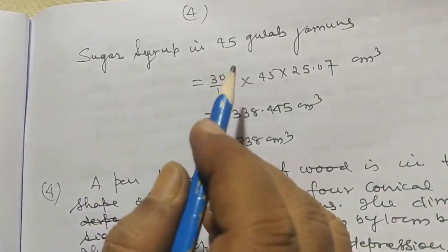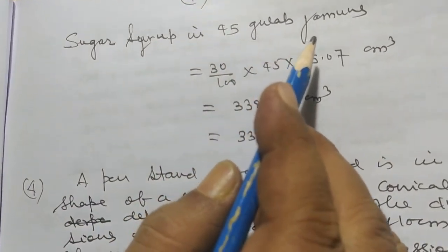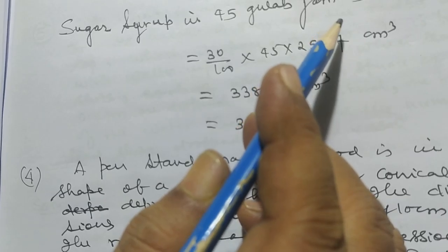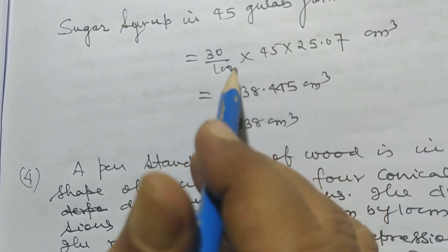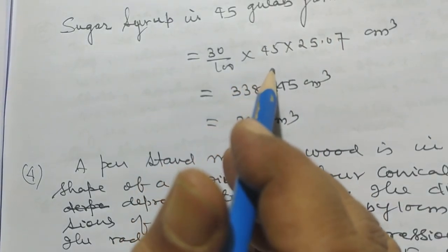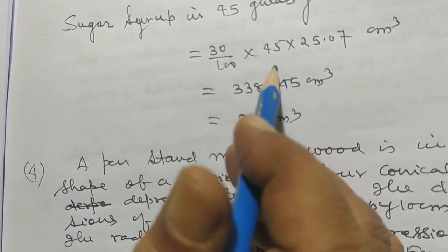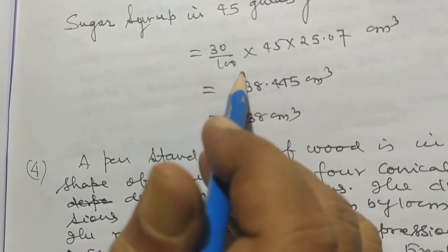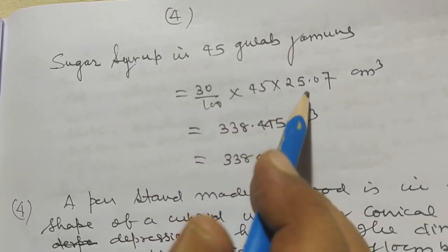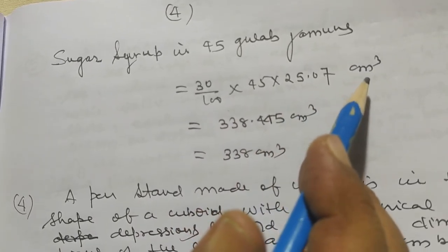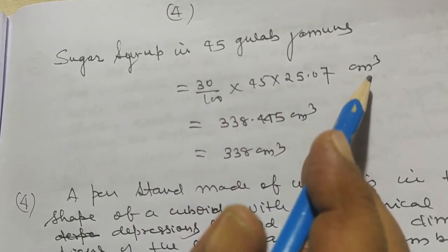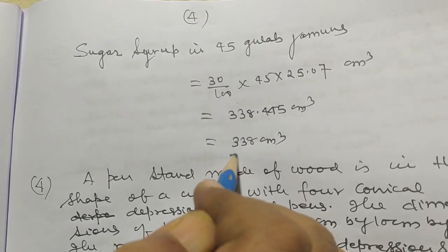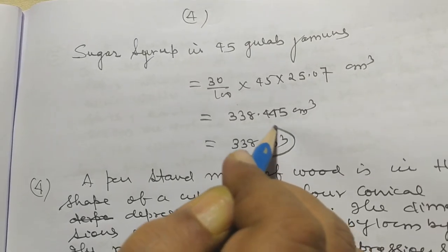Sugar syrup in forty-five gulab jamuns is thirty percent. So volume of syrup equals thirty by hundred into forty-five into twenty-five point zero seven, that is approximately three hundred thirty-eight centimeter cube.